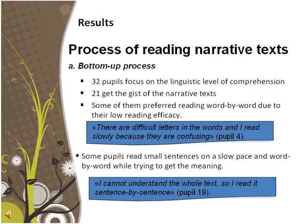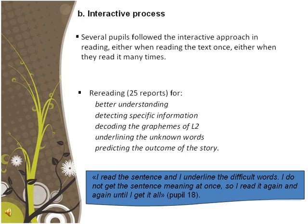The data collected shed light on the process that bilingual pupils develop their comprehension of the text. Most of them tended to follow word-by-word models, focusing on the linguistic level of comprehension. 21 of them used the bottom-up approach to get the gist of the narrative texts, some reading word by word due to low reading efficacy. Several pupils followed the interactive approach, either reading the text once or many times. Re-reading seems to be a favorite technique for better understanding, detecting specific information, decoding graphemes, underlining unknown words, or predicting the outcome of the story. Most of the time, these processes took place simultaneously.